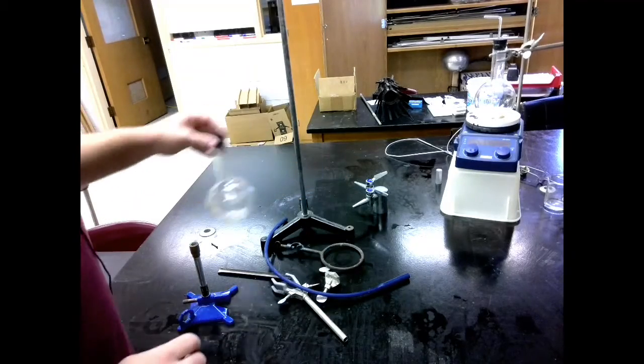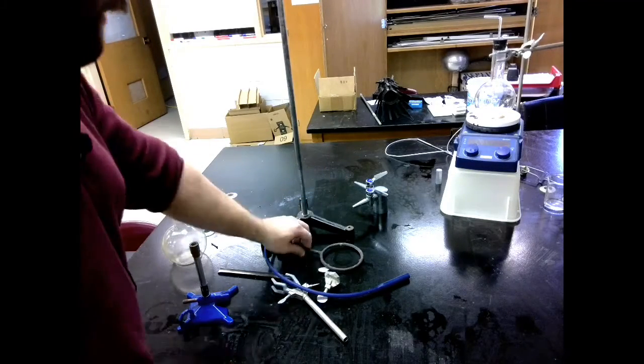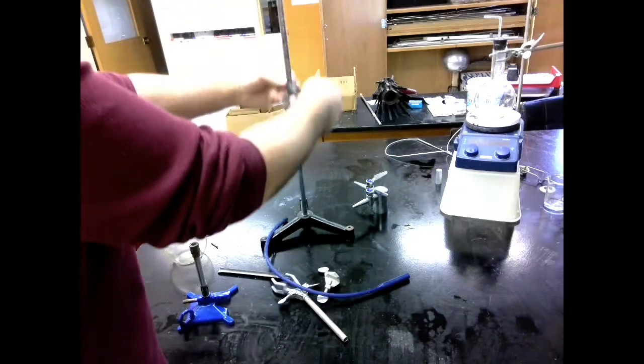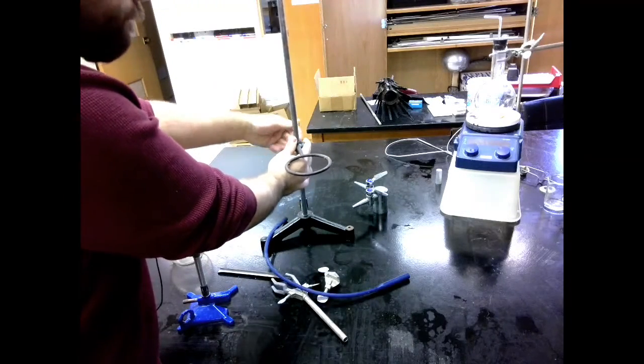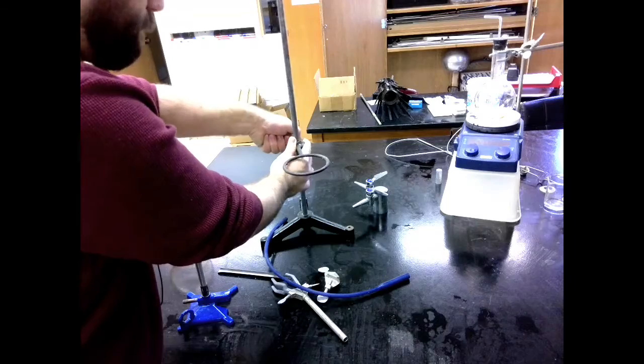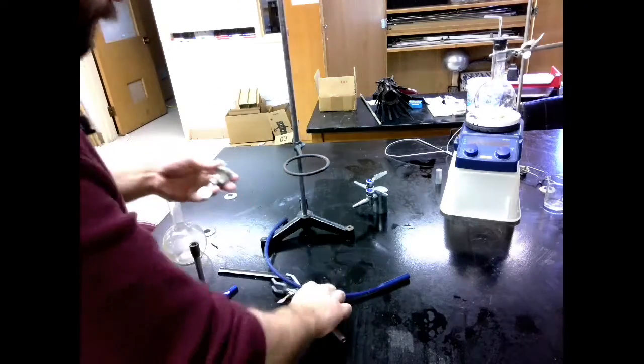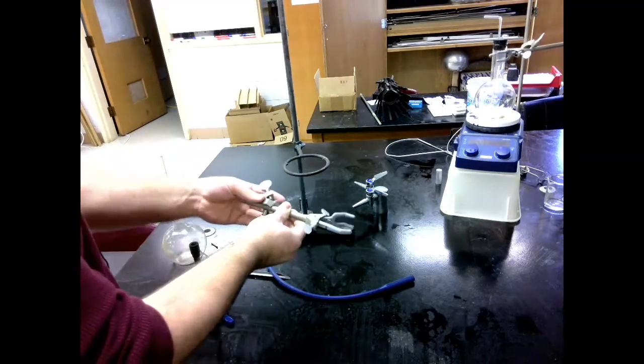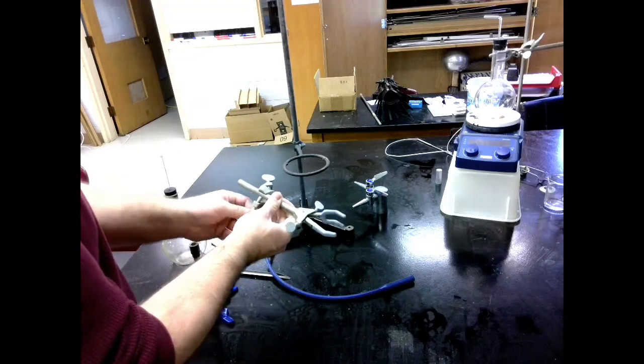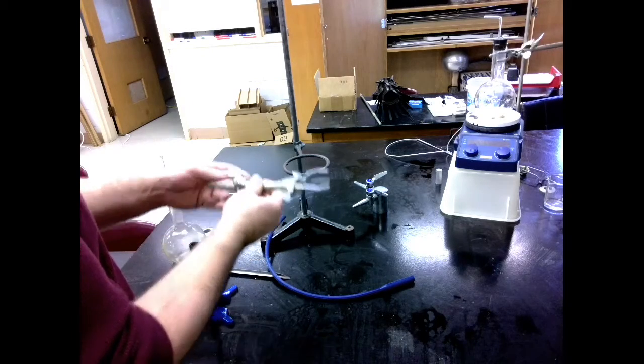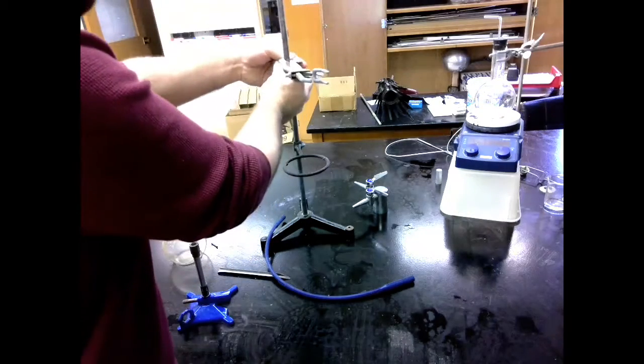First thing I'm going to do is set my ring on my ring stand. Tighten it up, and we'll just set it at a relative height for now. I'm going to set up my clamp here, and I'm just getting it started.